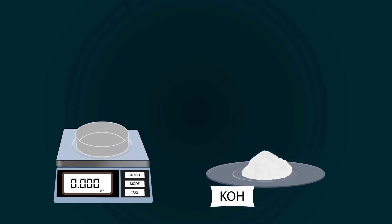Now start adding potassium hydroxide into the petri dish with the help of a spatula. Weigh precisely up to 5 grams.